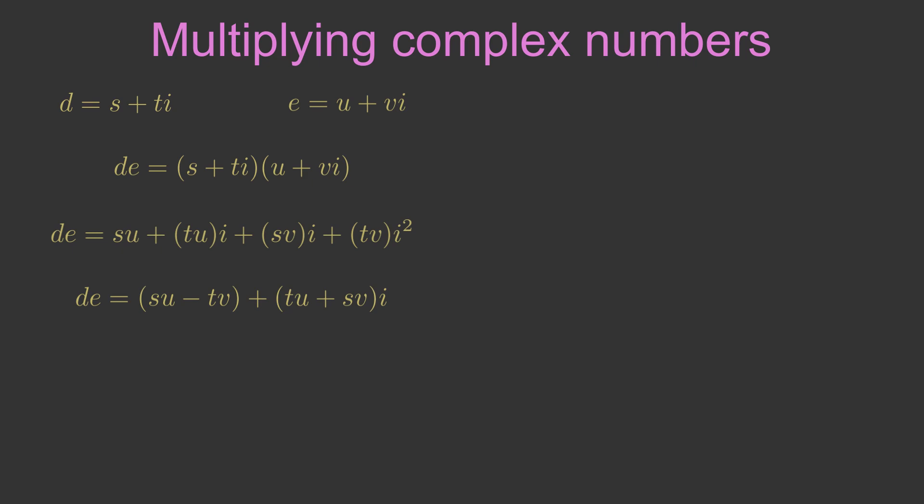We could do the same as we did for addition and compare complex multiplication with vector multiplication. But we can't compare those things directly because there is no way of multiplying two 2-vectors to give another 2-vector as a result.